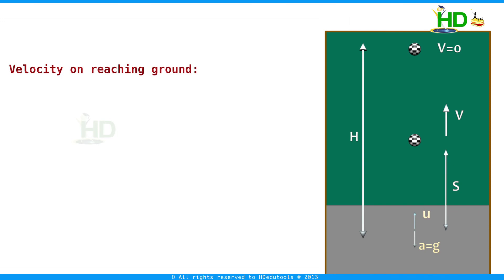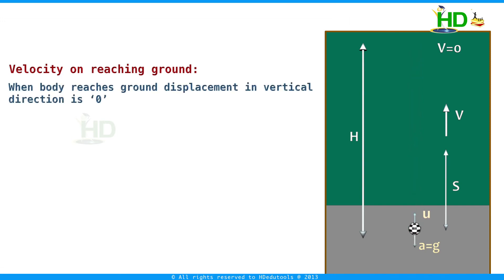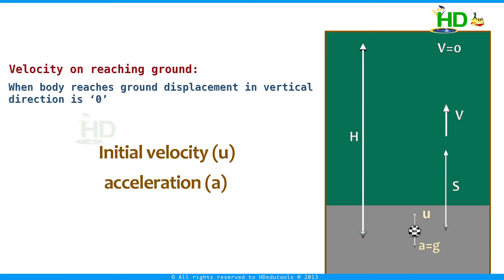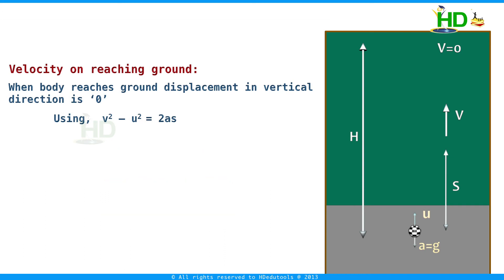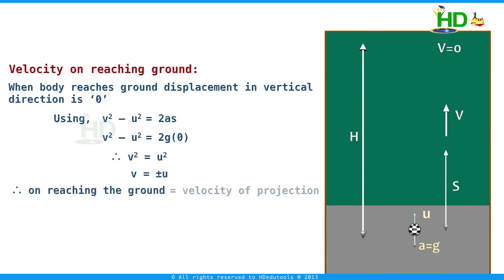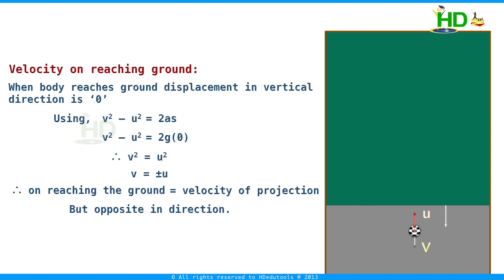The velocity on reaching the ground: when the body returns to the ground, the displacement in the vertical direction is zero. Using v squared minus u squared equal to 2as with s equal to 0: v squared equals u squared, so v equals plus or minus u. Therefore, the velocity on reaching the ground equals the velocity of projection in magnitude but is opposite in direction — downward instead of upward.